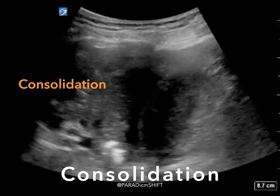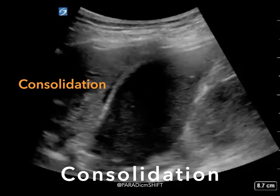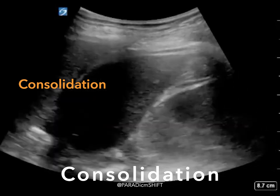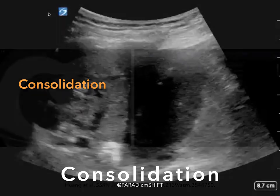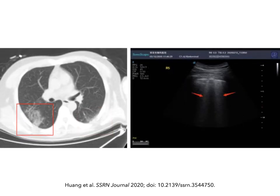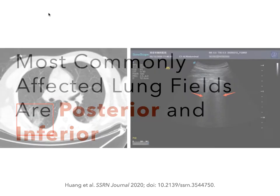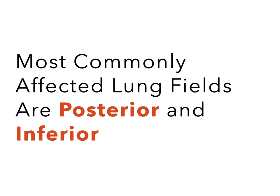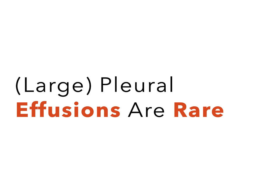Here's an example of a consolidation in a patient with COVID. The tissue-like density is above the diaphragm, so we know it's consolidation instead of a solid organ. The Huang paper does a great job of correlating CT images with ultrasound findings — pleural-based lesions on CT correspond to the pleural irregularity and thickening we see on ultrasound, and ground glass opacities on CT correspond to the B lines we see on ultrasound. The most commonly affected lung fields are posterior and inferior, so these will be the highest-yield zones to scan. These patients will almost never have findings in the anterior zones. Furthermore, pleural effusions — especially large ones — are rare.